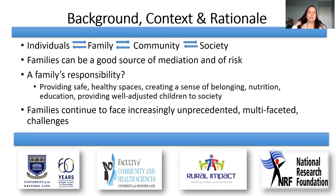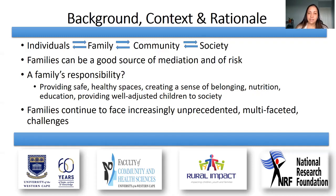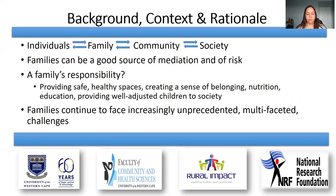Just to give you some background, context, and rationale to the study. Individuals together often make up a family unit, and this can be defined in however you define your family, wherever you consider your family. All of these families live in different communities and make up the society that we live in. And so as a system, individuals and families affect communities and society, and the effect moves in the other direction as well. We know theoretically from the literature that families can be a good source of mediation, but they can also be a source of risk.